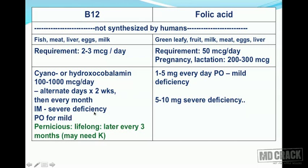For B12 treatment, cyanocobalamin or hydroxycobalamin is used at 100 to 1000 micrograms per day on alternate days for the first two weeks, then every month intramuscularly for severe deficiency until corrected, then by oral route. For pernicious anemia — where there is no intrinsic factor of Castle — B12 must be given lifelong: alternate days for two weeks, then monthly, then every three months.